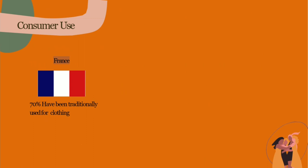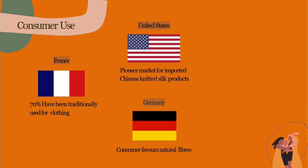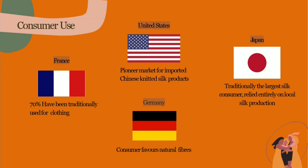Regarding consumer use, in France more than 17 percent of silk fabrics in the French market have traditionally been used for clothing. In the United States, it has been a key market for imported Chinese knitted silk products — initially mainly thermal underwear, and now also elegant casual items like t-shirts. In Germany, consumers favor natural fibers, importing silk garments, accessories, and interior decoration fabrics. In Japan, it is traditionally the largest silk consumer, relying entirely on local silk production, mostly for kimonos.